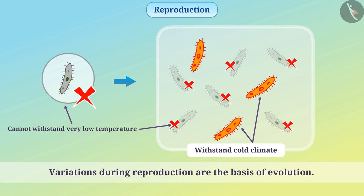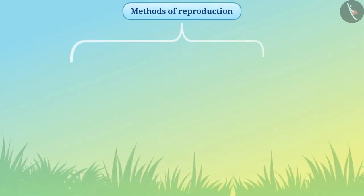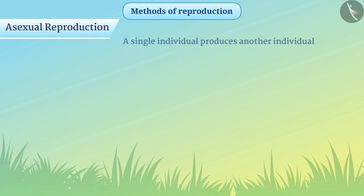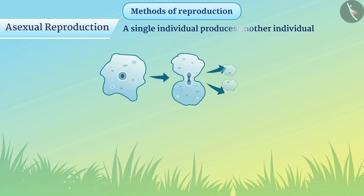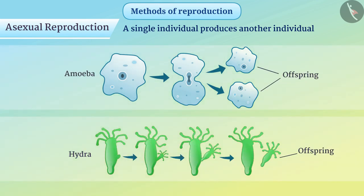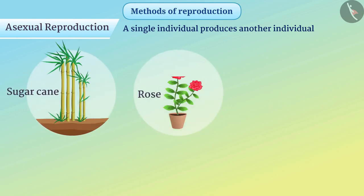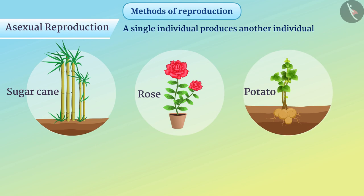Therefore, variations during reproduction are the basis of evolution. There are two methods of reproduction: sexual reproduction and asexual reproduction. The method of reproduction in which a single individual produces another individual is called asexual reproduction. For example, unicellular organisms like amoeba and hydra produce their next generation by asexual reproduction. Some plants like sugarcane, rose, and potato can also be produced from any part of the plant — this is also asexual reproduction.